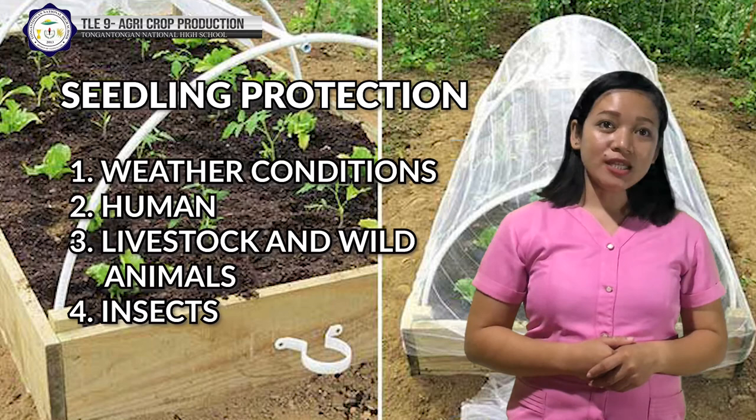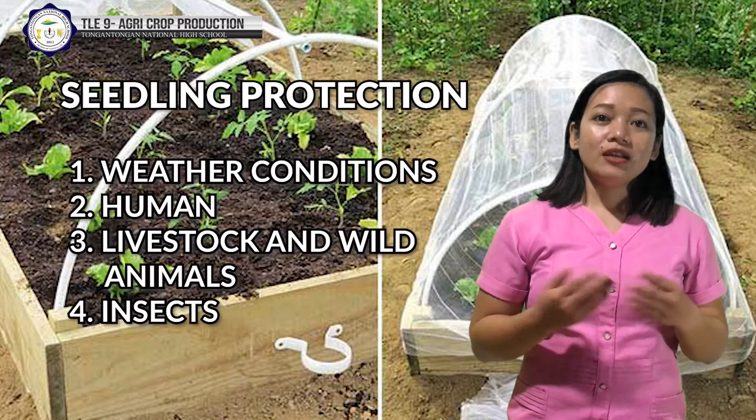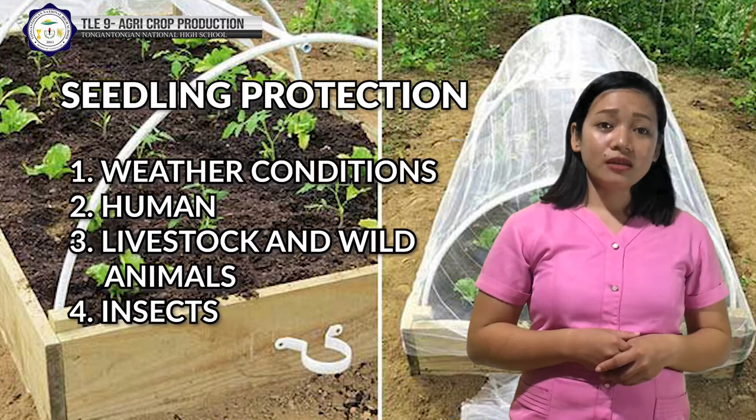Next is livestock and wild animals — livestock and wild animals browsing or grazing on seedlings; fencing can offset this. Rodents such as field mice or rats frequently cause serious damage to seedlings in the nursery as well as in the field by eating them. To control this, cleaning the nursery helps to reduce their population.